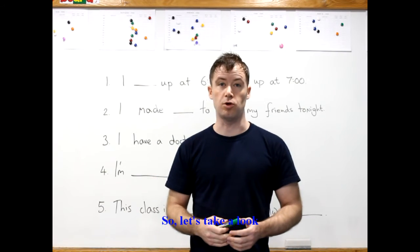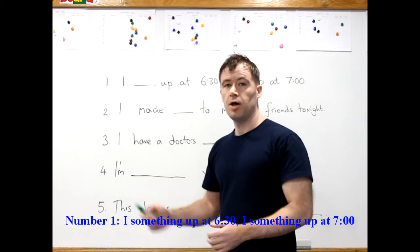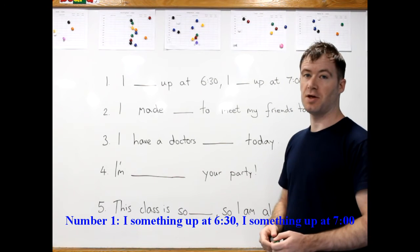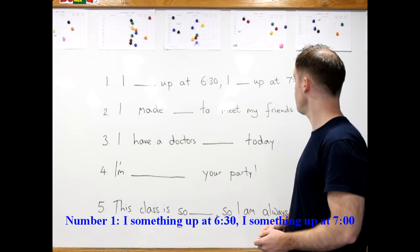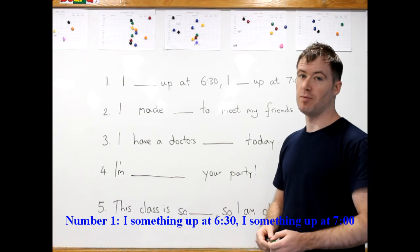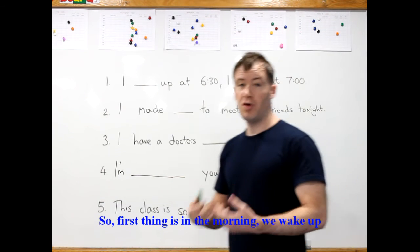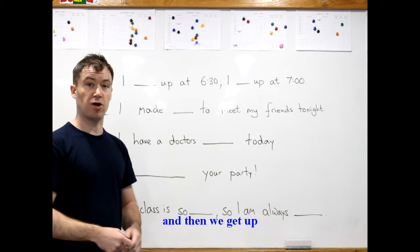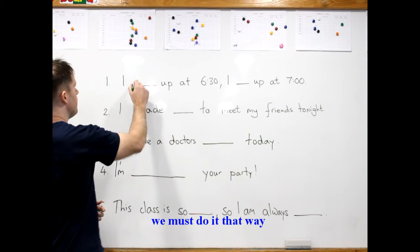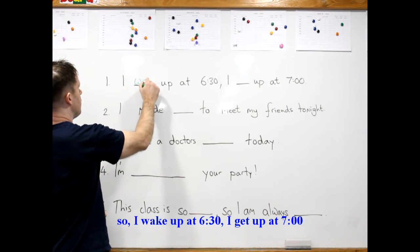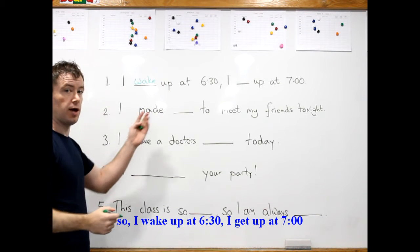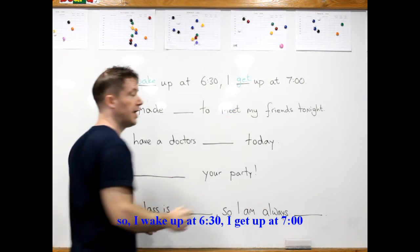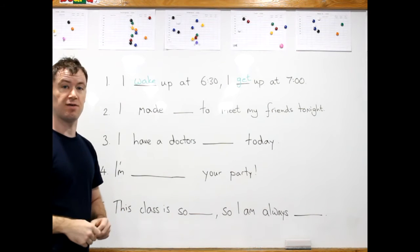Let's take a look. Number one: I something up at 6:30, I something up at seven. So first thing is in the morning we wake up, and then we get up. Must do it that way. Okay, so I wake up at 6:30, I get up at seven.